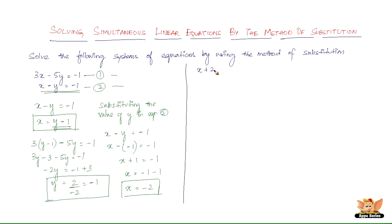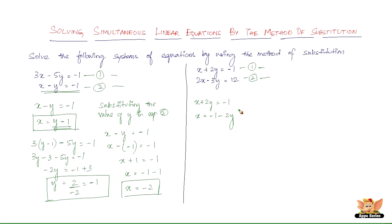We have x plus 2y equals minus 1, and 2x minus 3y equals 12. Let this be equation 1 and this be equation 2. The simpler one is equation 1, so let me make x the subject: x plus 2y equals minus 1, so x equals minus 1 minus 2y. I will substitute this value of x into equation 2 — you cannot substitute it back into equation 1, because then you'd get minus 2y minus 2y again. So you substitute into the other equation.